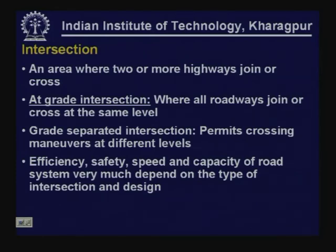Efficiency, safety, speed, and capacity of the road system vary and very much depend on the type of intersection and design. There are different types of at-grade intersections and grade-separated intersections, and what will be the efficiency, safety, speed, and capacity all depends on the type of intersection and design adopted.